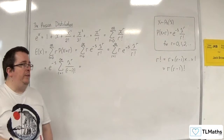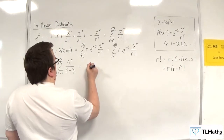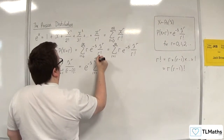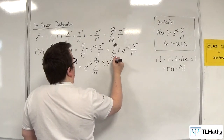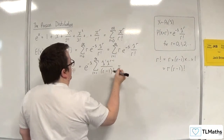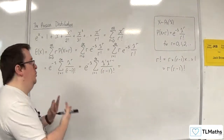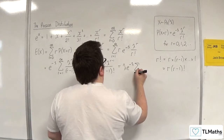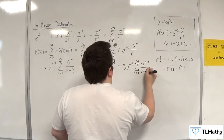The next thing I'm going to do is factor a lambda out of the numerator. So I'll have e to the minus lambda times the summation from r equals 1 to infinity, writing lambda to the r as lambda to the 1 times lambda to the r minus 1. Because that lambda has nothing to do with r, I bring it all the way out, giving lambda times e to the minus lambda times the sum from r equals 1 to infinity of lambda to the r minus 1 over r minus 1 factorial.